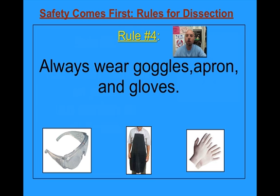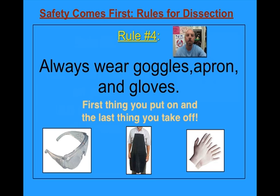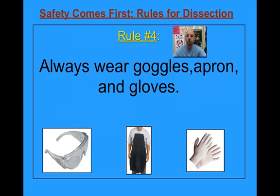Rule number four is always wear your goggles, aprons, and gloves. All of the specimens that we're going to be looking at are preserved, which means that they have been soaked in chemicals in order to keep them from breaking down and decomposing. It's all fun and games until you get those things on your clothing, on your skin, and of course in your eyes. So we do always need to make sure that we're wearing proper safety equipment. Goggles and aprons are available in the classroom, and I will have gloves available for everybody once we begin dissections.